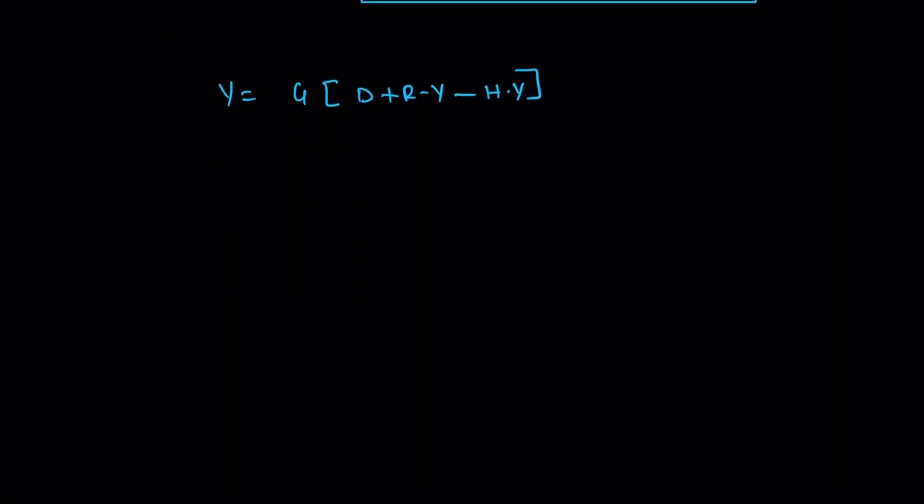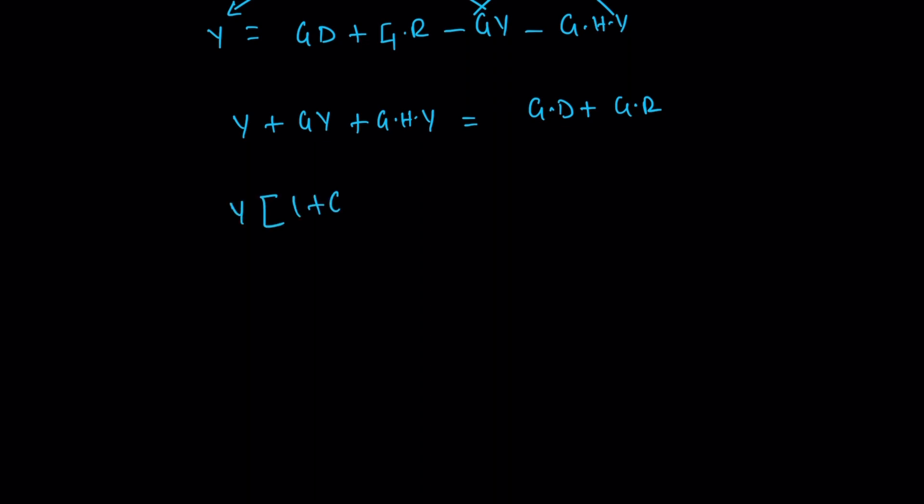Then we multiply individually. So Y equals G D plus G R minus G Y minus G H Y. Then, Y equals G D plus G R. Then you take Y outside. So Y moving out, 1 plus G plus G H equals G D plus G R.